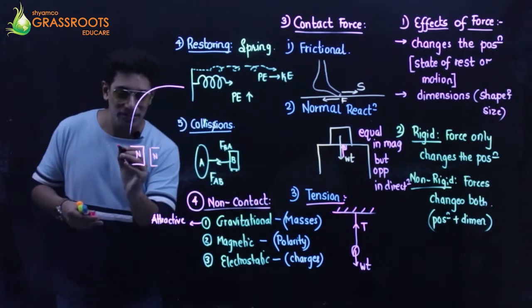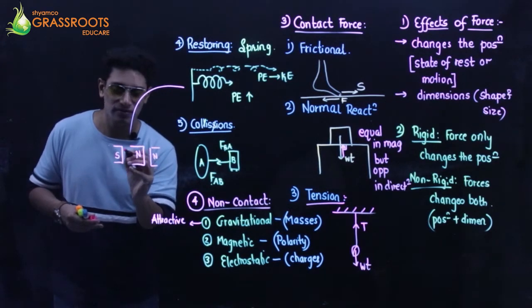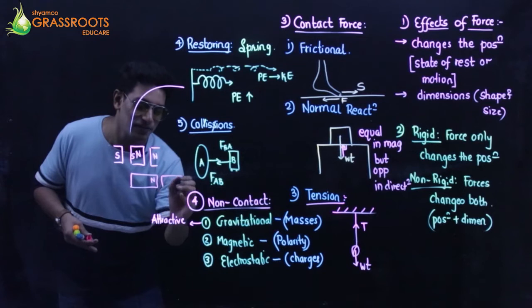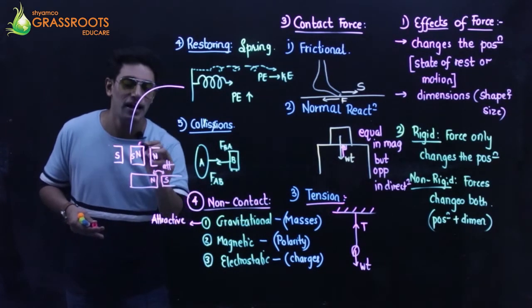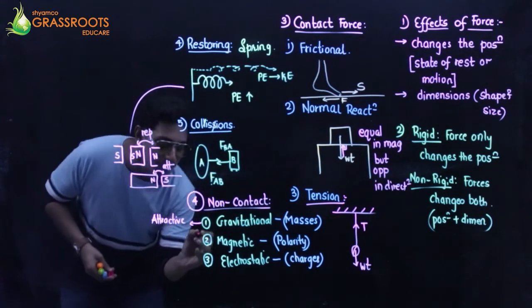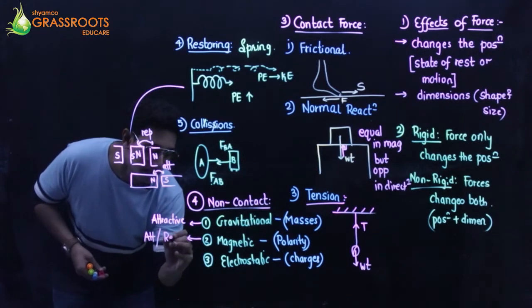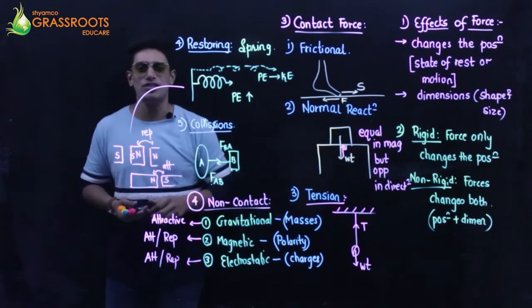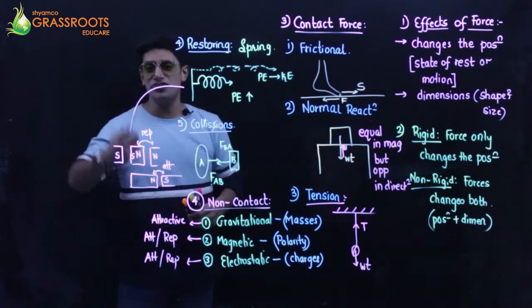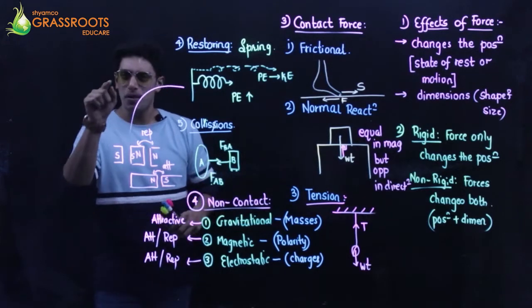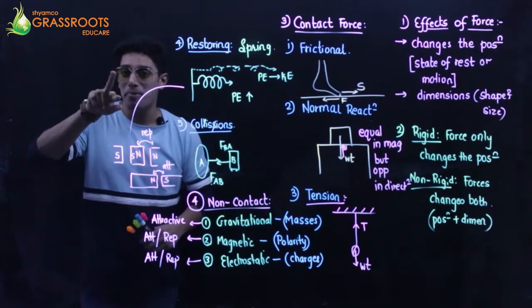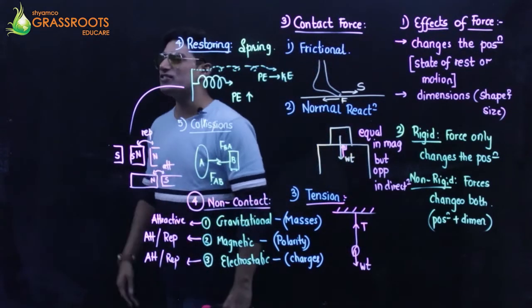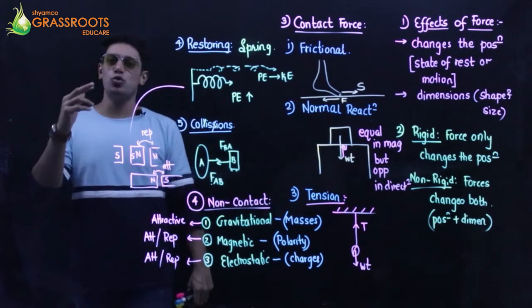For magnetic force: two like poles repel, but two unlike poles attract - so magnetic forces can be attractive or repulsive. Similarly, electrostatic force is because of charges: like charges (plus-plus) repel, but unlike charges (plus-minus) attract. So for non-contact forces, gravitational force is the only always-attractive force; the remaining two - magnetic and electrostatic - can be attractive as well as repulsive depending on the condition.